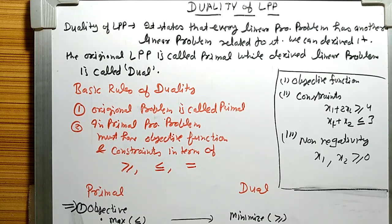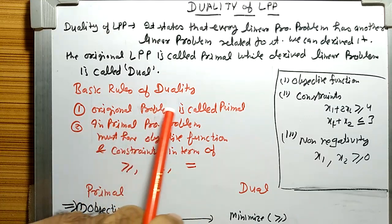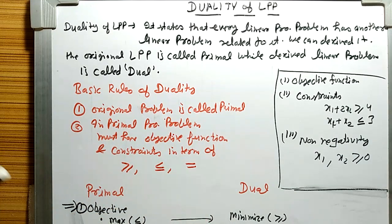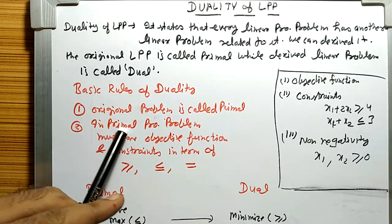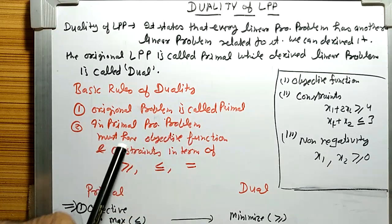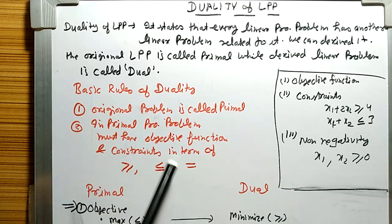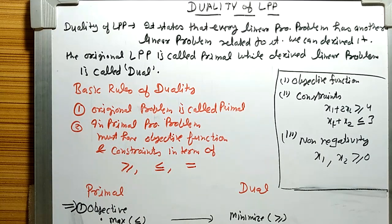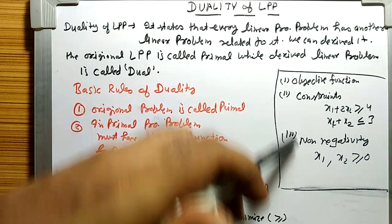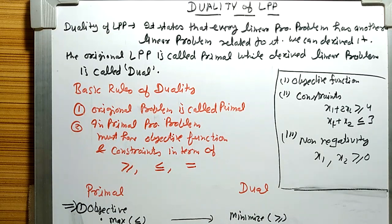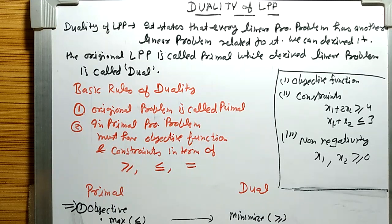So first we will learn from the basic rules. The original problem is called the primal. In a primal programming problem, there must be an objective function and constraints in terms of inequalities — either a greater-than sign, a less-than sign, or an equal sign. Duality is essentially the other form of the linear programming problem.